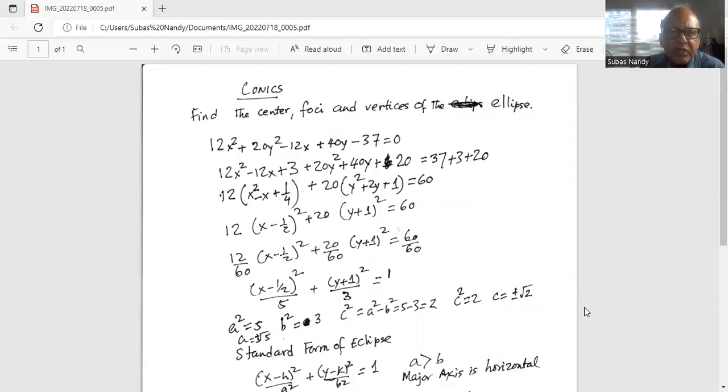So first we separate the x square x term. So 12x square plus minus 12x plus 3. I added then 20y square plus 40y plus 20.